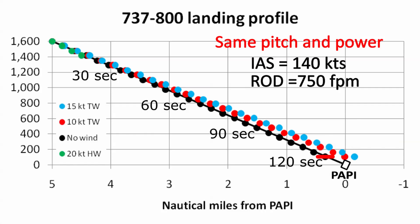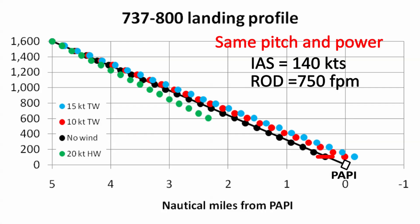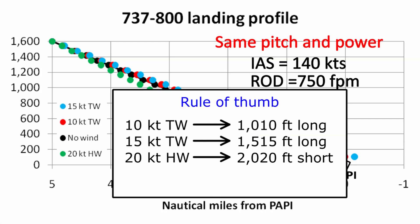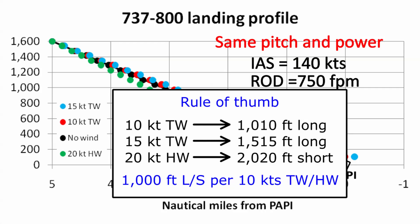For the sake of comparison, I've run a third final, this time with a 20 knot headwind, still keeping the same pitch and power settings. We end up short by more than 2,000 feet. We can extract from these graphs a useful relationship: if we keep the no wind pitch and power settings on final, then a 10 knot tailwind will fly us 1,000 feet long, a 15 knot tailwind will make us 1,500 feet long, and a 20 knot headwind will leave us 2,000 feet short. The rule of thumb is that we will end up 1,000 feet long or short for every 10 knots of tailwind or headwind on final.